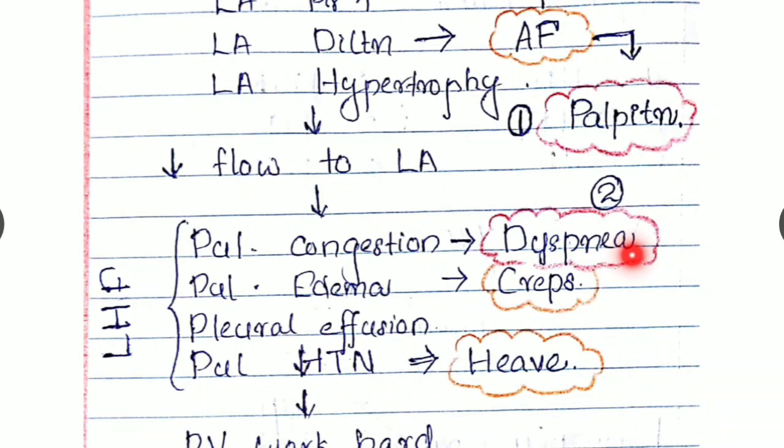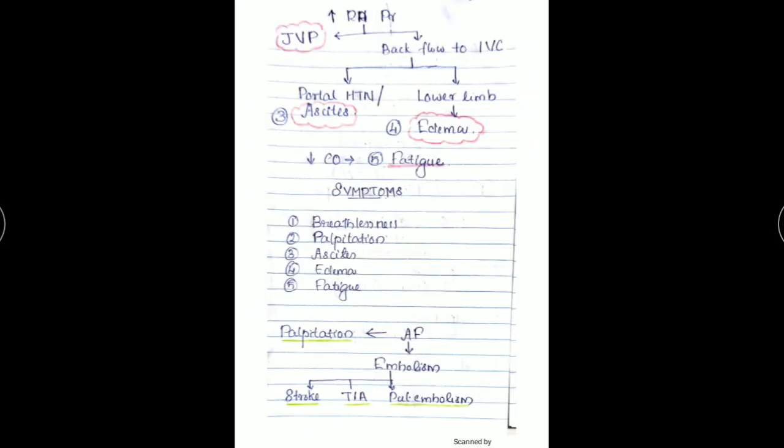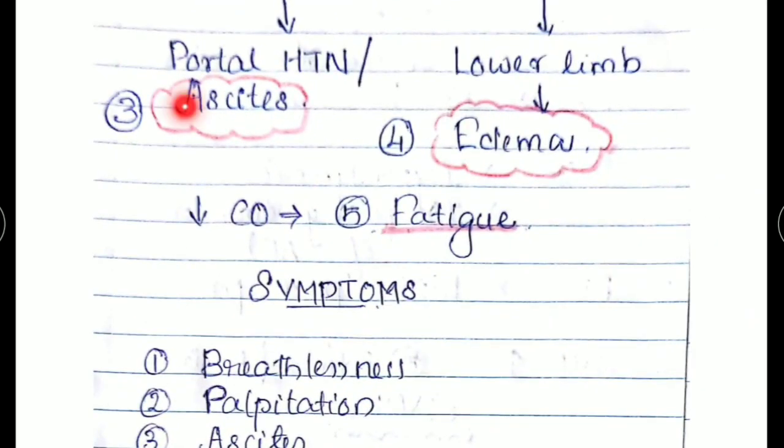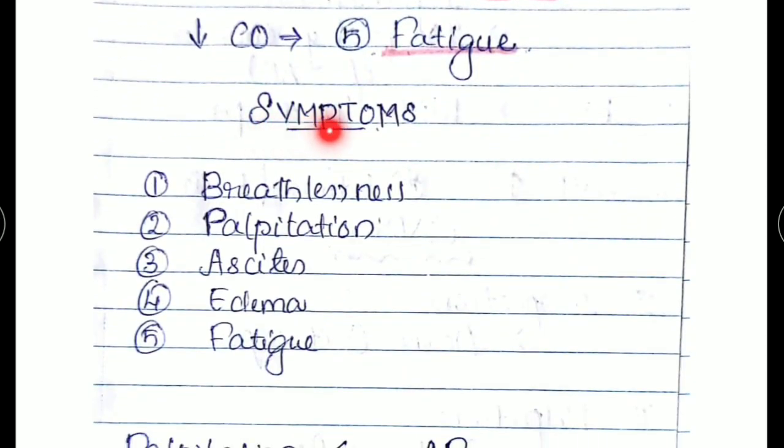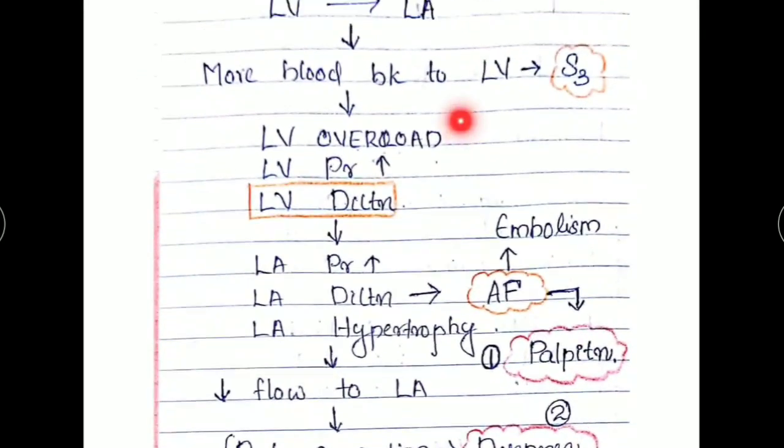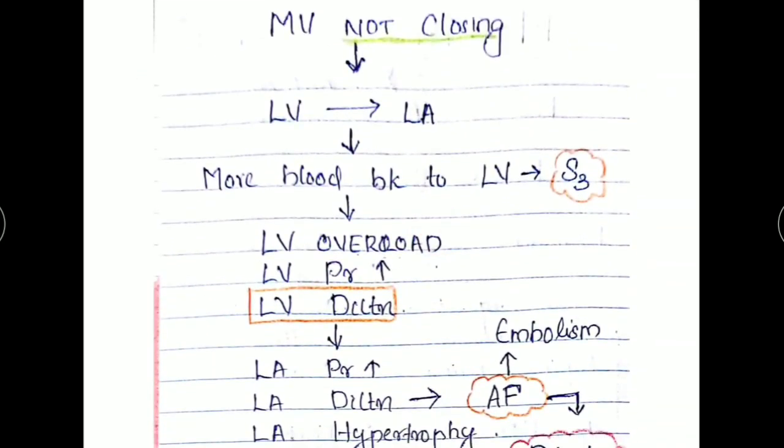The second symptom being dyspnea, which is usually on exertion. Then third being the ascites, lower limb edema, and fatigue. These are all the symptoms of mitral regurgitation: breathlessness, palpitation, ascites, edema, and fatigue. Also, you can see because of left ventricular rapid filling and overload, you can hear an S3 gallop rhythm.